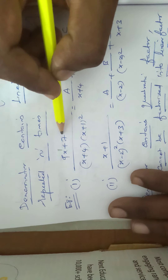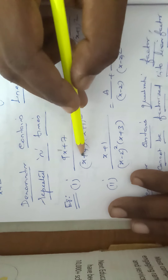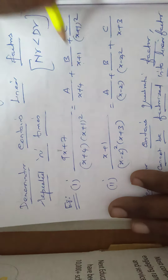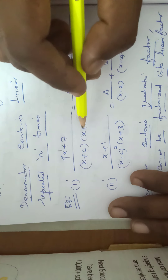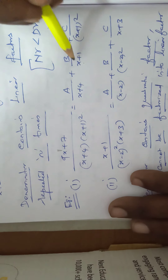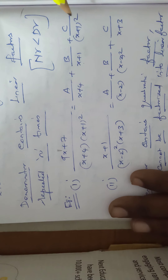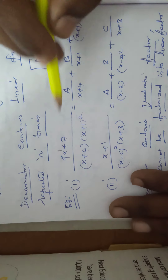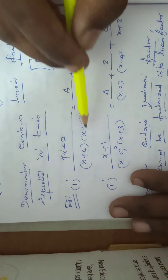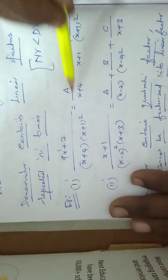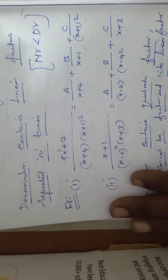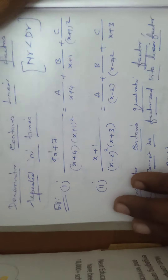For example: (9x + 7)/[(x + 4)(x + 1)²]. The repeated factor (x + 1)² is written in two parts: A/(x + 4) + B/(x + 1) + C/(x + 1)².